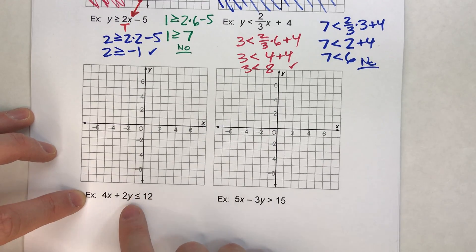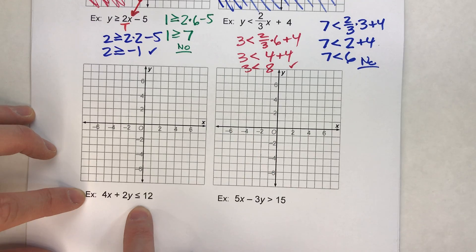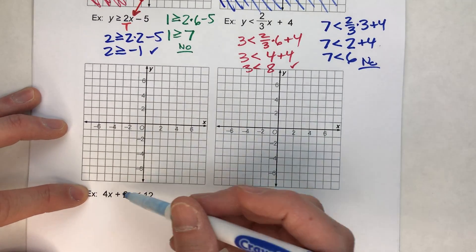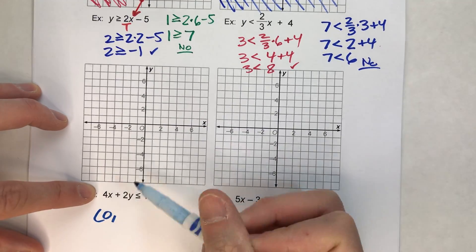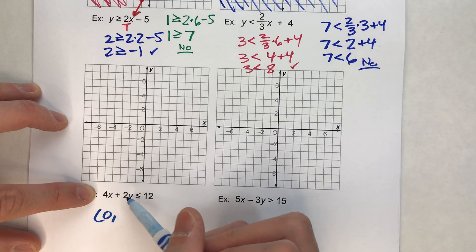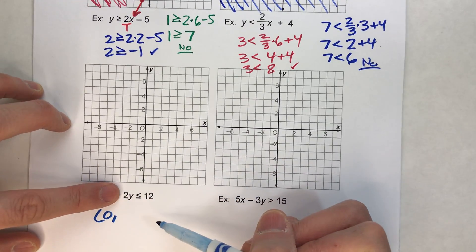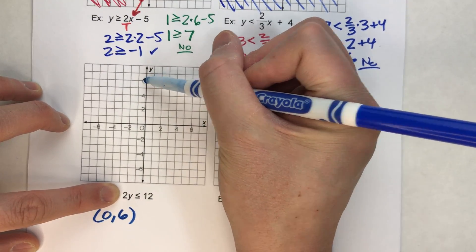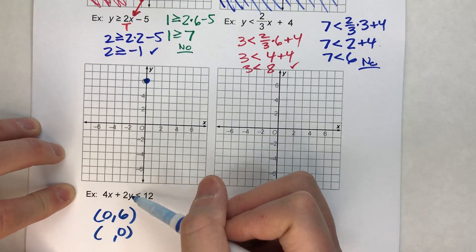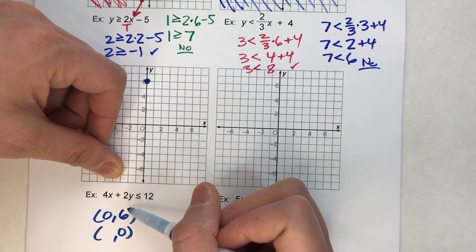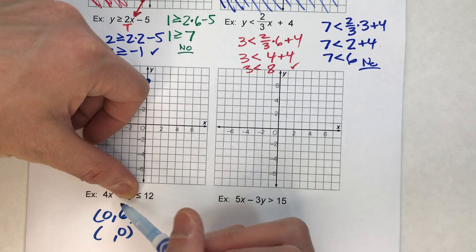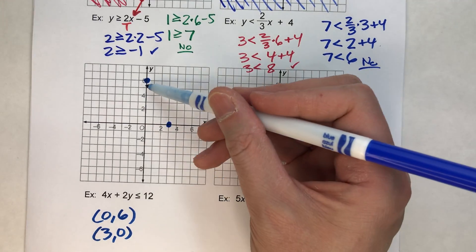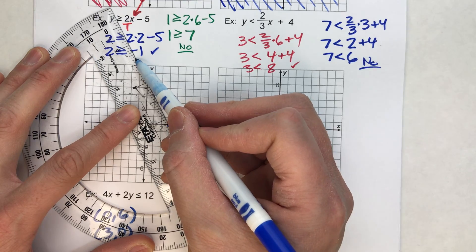We've got 4x plus 2y is less than or equal to 12. We've got the less than or equal to, so we know it's going to be a solid boundary line. I'm going to use the x and y intercepts to graph it. If I make x equal to 0, what does y have to be so that 2y equals 12? It has to be 6. So the point 0, 6 is on my line. Now let's make y equal to 0 — 4 times what value of x would equal 12? 4 times 3 equals 12. So the point 3, 0 is also on our line. By finding the x and y intercepts, now I know what my line looks like.